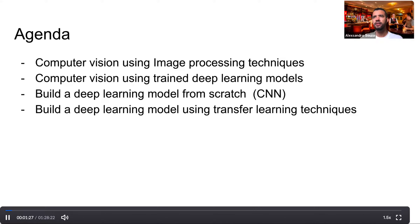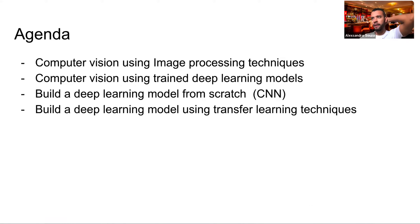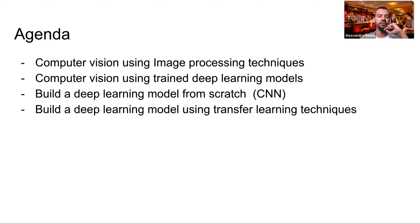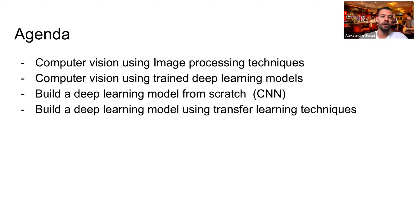Let's start. So, computer vision — the agenda here: we're going to talk about computer vision using image processing techniques without any machine learning, then computer vision using training and deep learning models. We'll leverage models already available from the community, build our own model from scratch, and create a model using transfer learning techniques — leveraging a pre-trained model and adding our own layer on top.